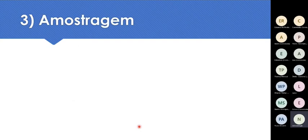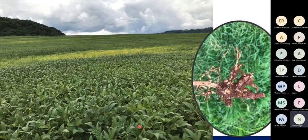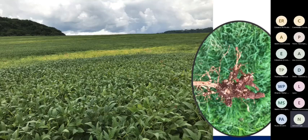Como os nematóides são microscópicos, não é possível vê-los a olho nu. Para ter certeza se uma área tem problemas, temos que fazer uma amostragem, coletar uma amostra e mandar ao laboratório analisar. A cana tem algumas peculiaridades em relação a outras culturas: na soja, é fácil perceber manchas amareladas e arrancar as plantas com o sistema radicular tomado por galhas. O produtor pode afirmar que tem Meloidogyne só de olhar o sistema radicular nessas manchas amareladas.